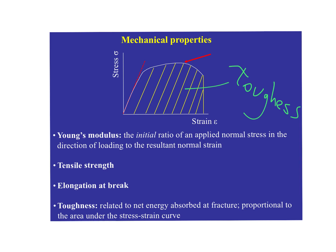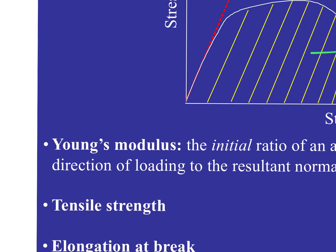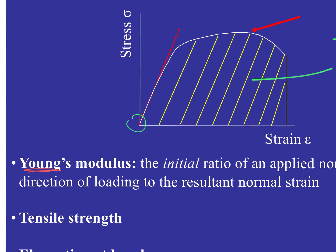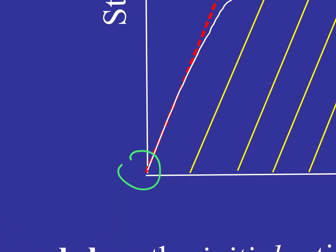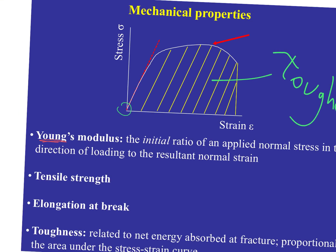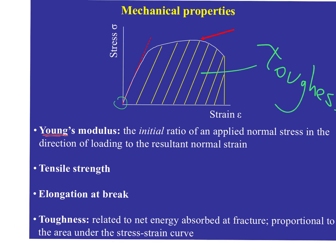From a practical standpoint, we first think about the modulus, or Young's modulus. When we measure this in the lab, we look at the initial slope of the stress-strain curve. The definition is the initial ratio of applied normal stress in the direction of loading to the resulting normal strain. For polymer samples, we take the first 5 to 20 data points off the stress-strain curve and say, here's our modulus for this material.